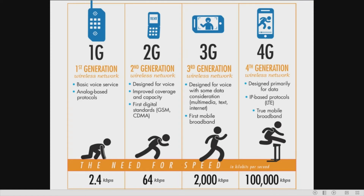Looking at the differences: the first generation was used only for basic voice service with an analog-based protocol, with a speed of just 2.4 kilobits per second. The second generation wireless network was designed for voice and improved the coverage of the first generation, and this is where the first digital standards — GSM and CDMA — were introduced.